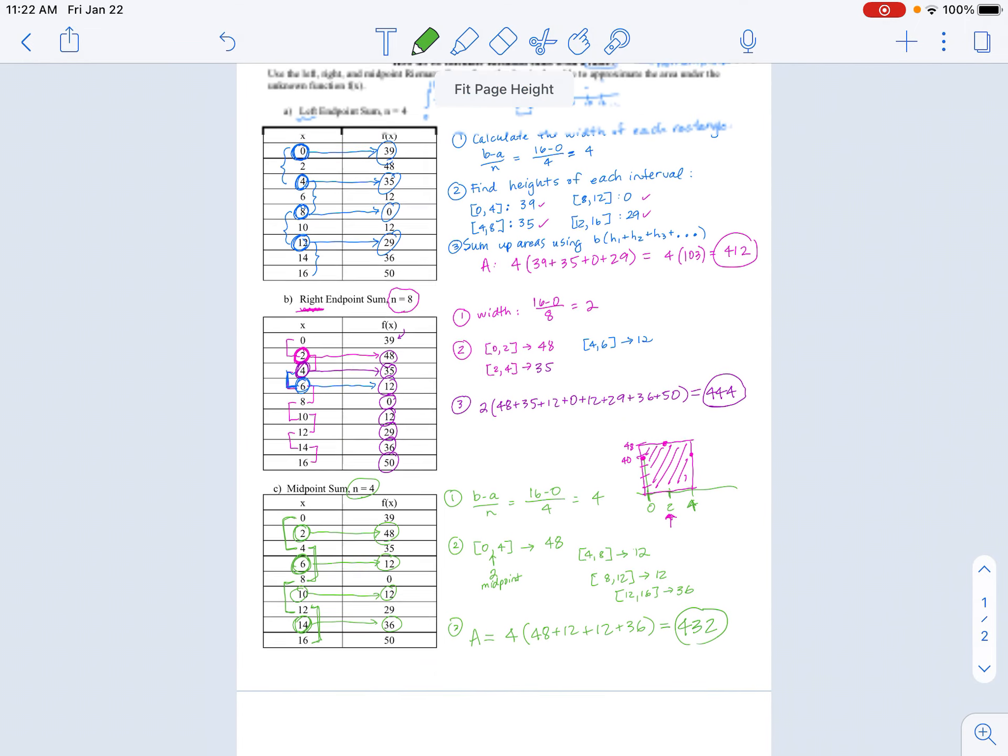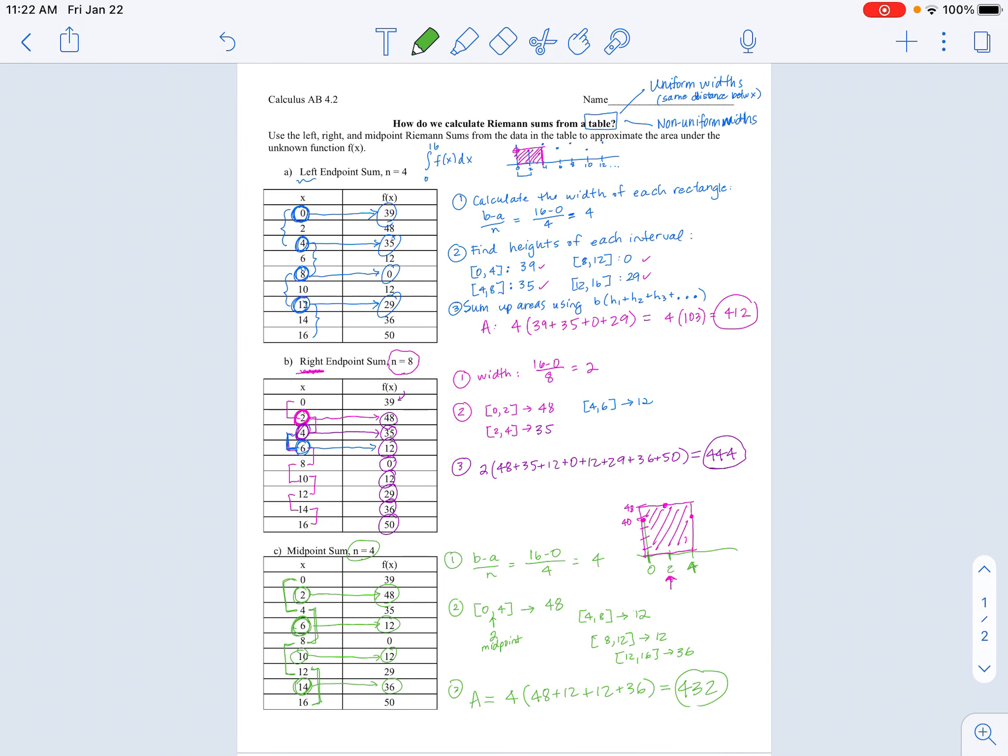So, next time we'll cover what happens when the x values between each data point, or the distance between each x value, are different.